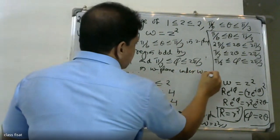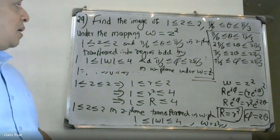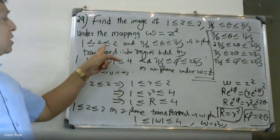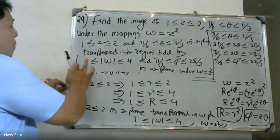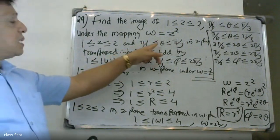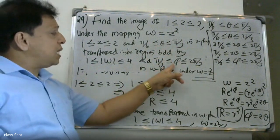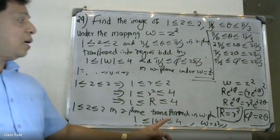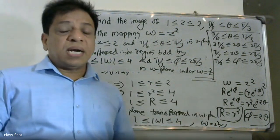The final answer: the region 1 ≤ |z| ≤ 2, 5π/6 ≤ θ ≤ 5π/3 in the z-plane is transferred into the region 1 ≤ |w| ≤ 4, 5π/3 ≤ φ ≤ 10π/3 in the w-plane under the mapping w = z².